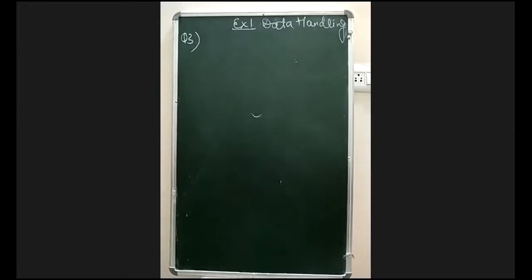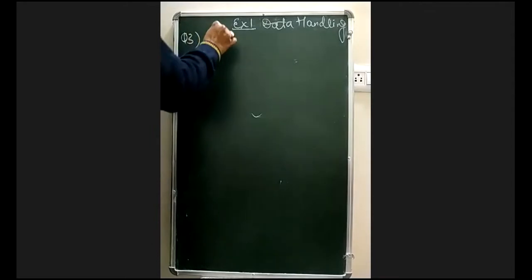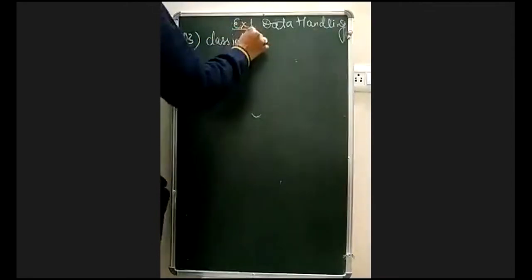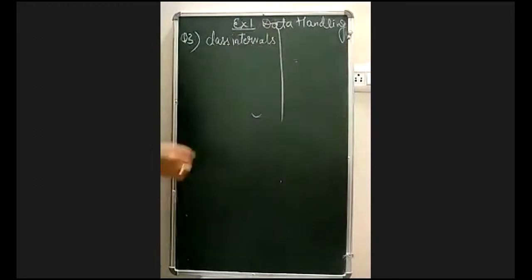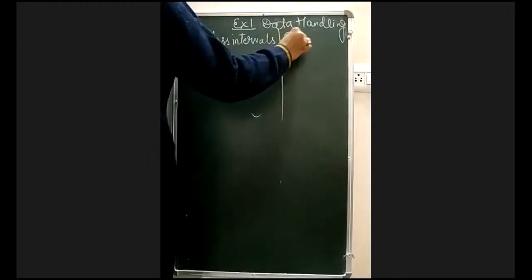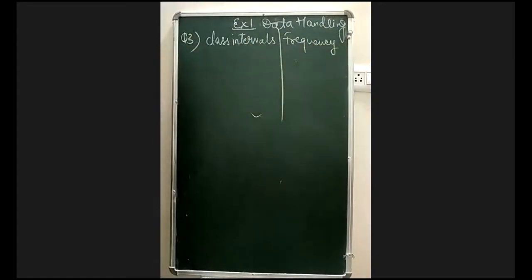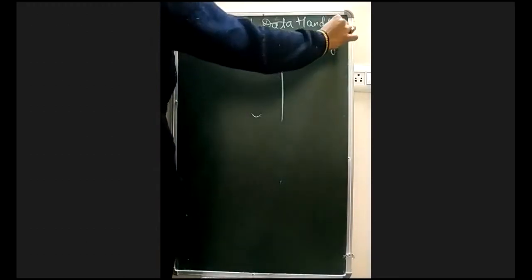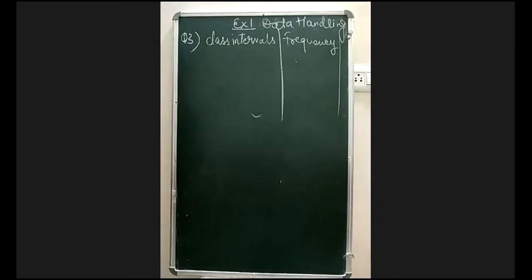We are going to create a frequency distribution table and you should do it along with me. The first heading will be class intervals, the second will be frequency — meaning the number of workers getting wages in that range — and the third will be tally marks.